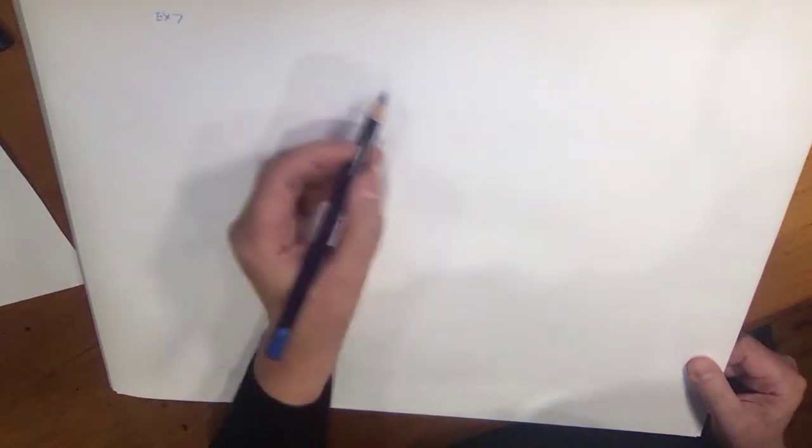So for the final two exercises in this set of drawings, we're going to get a little bit more complicated. To start off with, we're going to start with a rectangular prism.